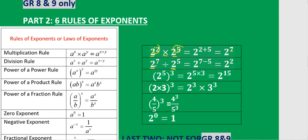If you are dividing exponents with the same base, for division you do the inverse of multiplication — you subtract. So you take the 7 and subtract the 5 and you get 2.